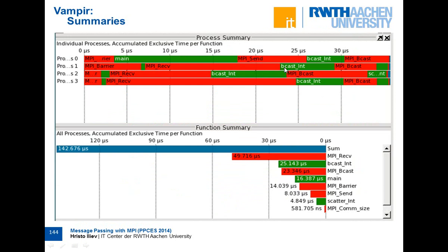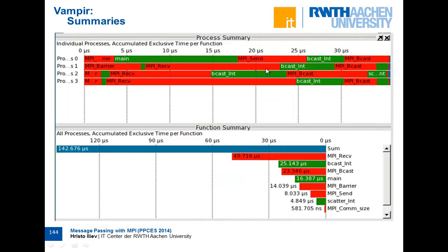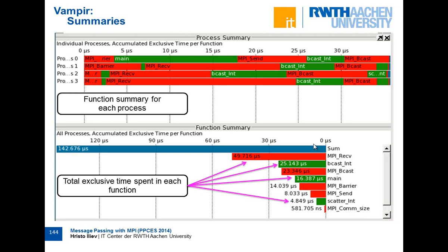There is also a process summary. The process summary is like a flat view of the same timeline, where different categories are concatenated one after another. For example, this is time spent in the main function — all times spent in the main function are put together. This is time spent in MPI barrier, send, and so on. You can switch between categories — for example, showing only total time spent in MPI calls, or broken down for each MPI function individually.